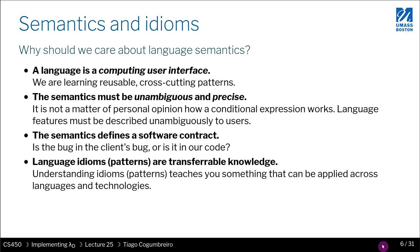A programming language acts as the user interface to the computer. You want to write some behavior - a program - and you need it to be run by your computer. The programming language gives you the concepts and abstractions to develop that program, since we don't usually program in assembly. Semantics must be unambiguous and precise - otherwise you can't explain what a program does, you're writing code aimlessly, and there's no way to assess success.